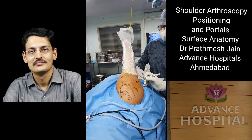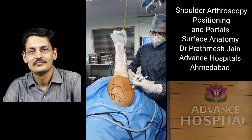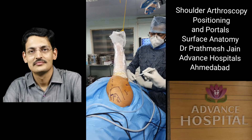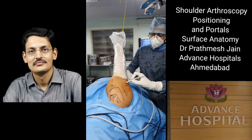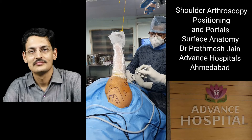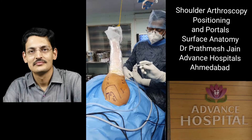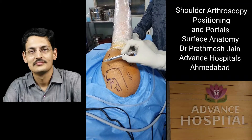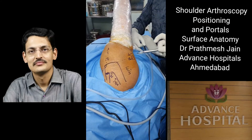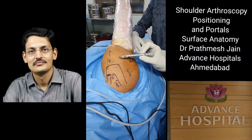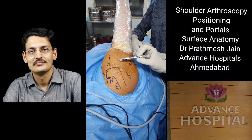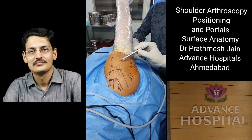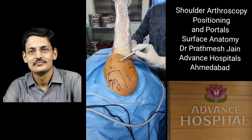The posterior portal is one of the important entry portals — the first portal you make. The angle of entry should be directed parallel to the floor, which is why glenoid orientation is so important. If your glenoid is parallel to the floor, this entry will also be parallel to the floor. If the patient is tilted slightly forward, you may need to angle your entry 10 to 20 degrees upward.